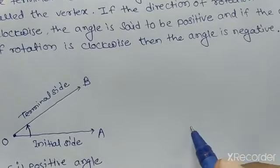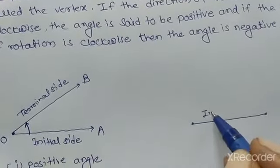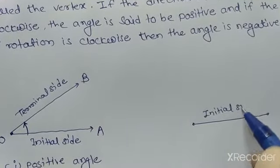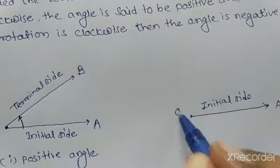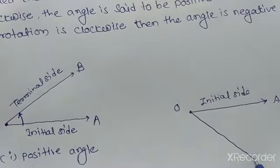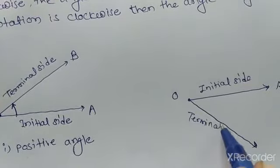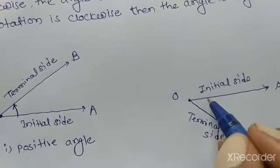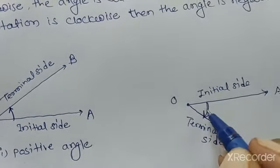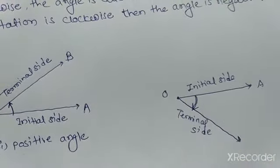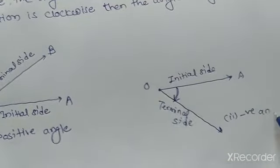If we consider this as the initial side and this as the terminal side, with the angle going in the opposite, clockwise direction — this angle is known as a negative angle.